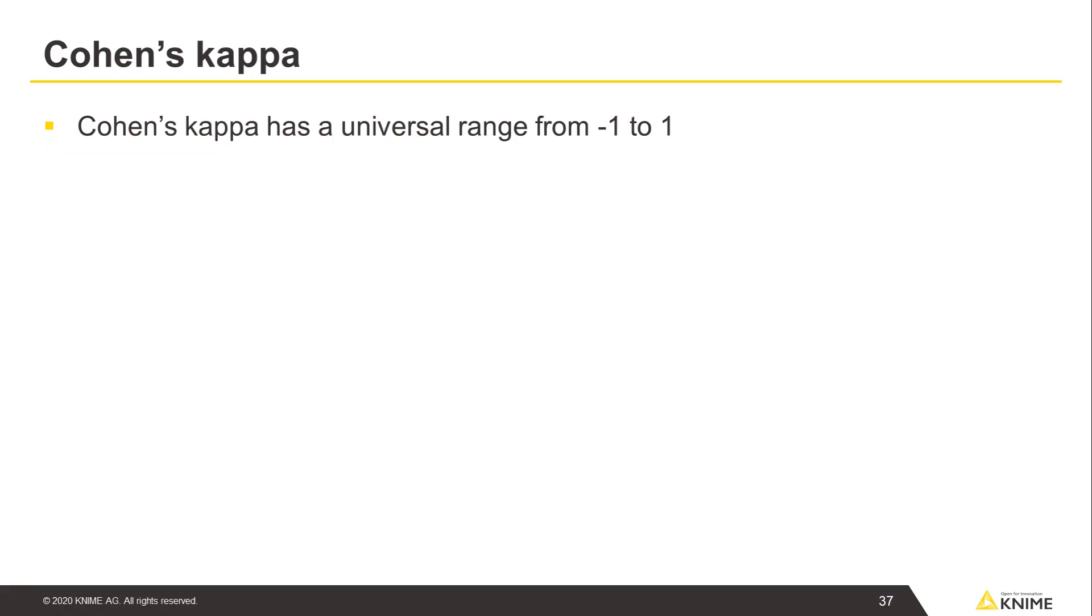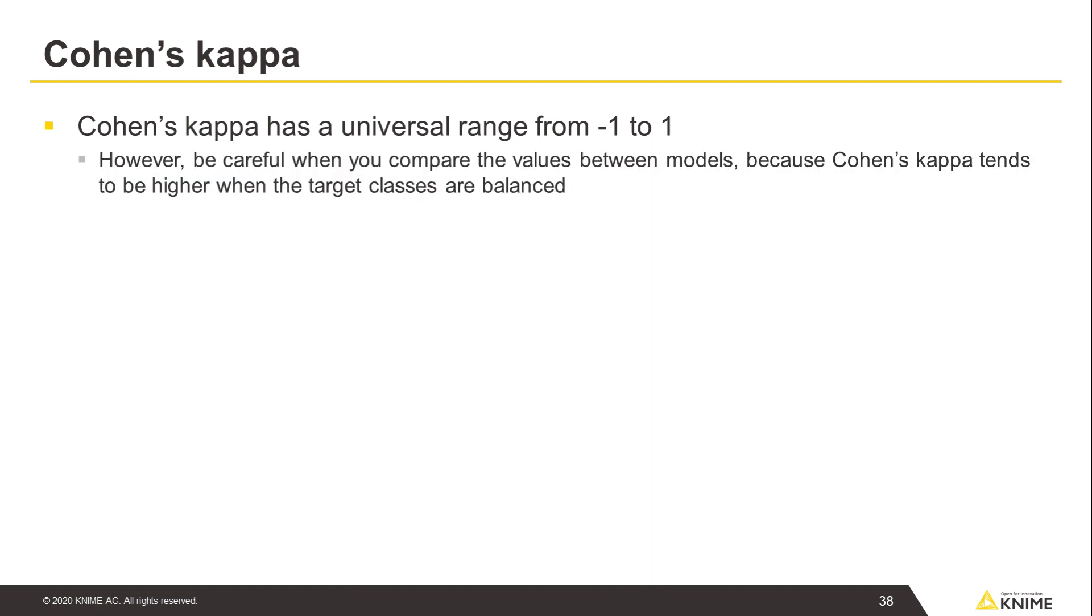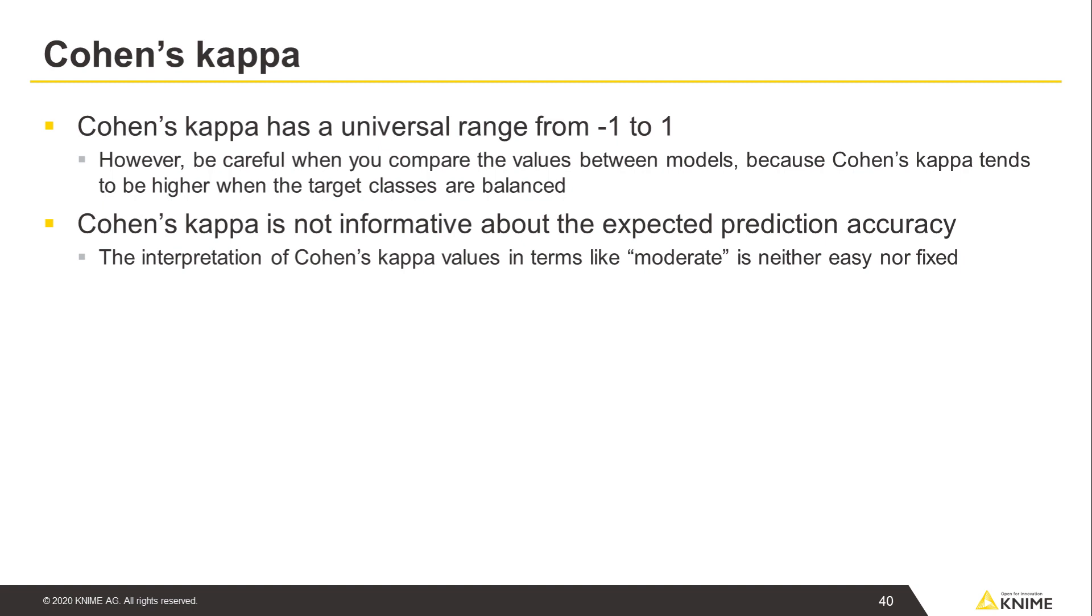Cohen's kappa has a universal range from negative 1 to 1. One corresponds to a perfect model. However, be careful when you compare the values of Cohen's kappa between models, because Cohen's kappa tends to be higher when the target classes are balanced. Cohen's kappa is also not informative about the expected prediction accuracy like overall accuracy is. The interpretation of Cohen's kappa values, even in written terms like moderate, is neither easy nor fixed.